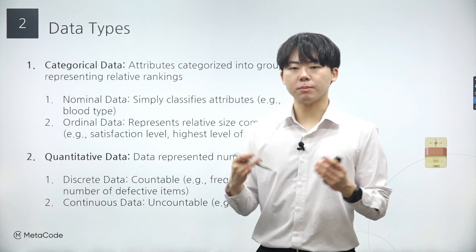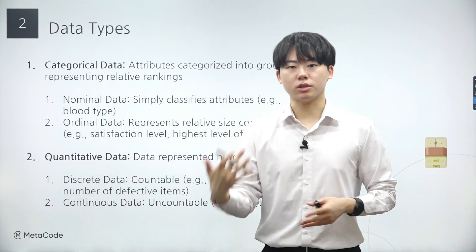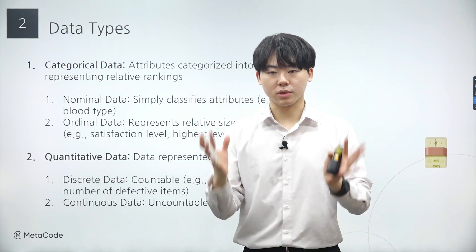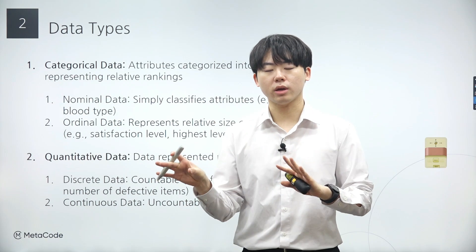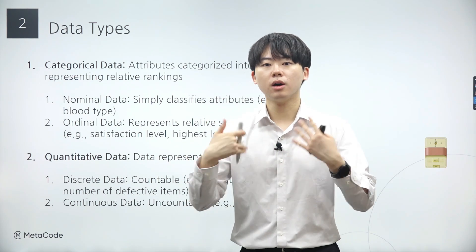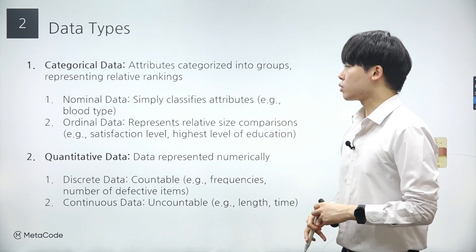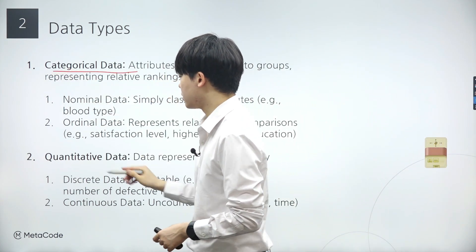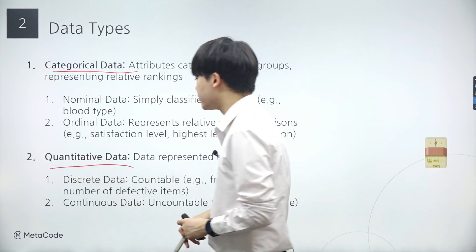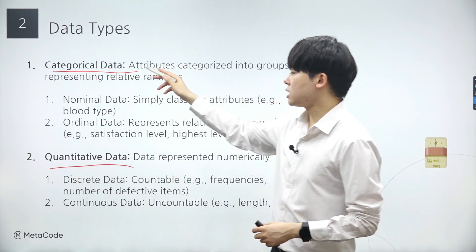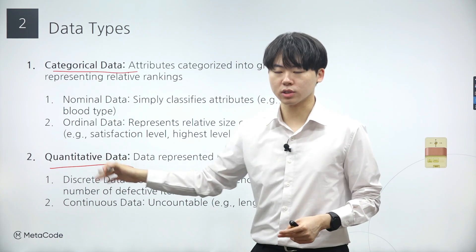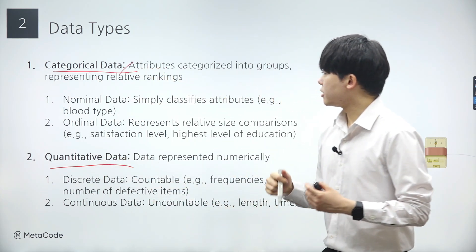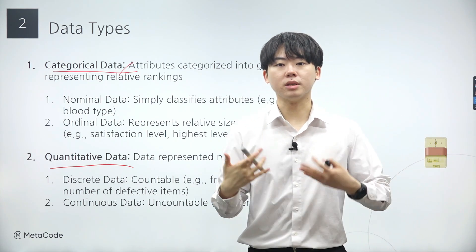As we explore statistics, we'll come across different types of data. These datasets represent our samples, and by employing techniques like visualization and other statistical methods, we'll extract insights about the population. We can categorize data types into two main categories: categorical data and quantitative data. Categorical data are often referred to as qualitative data, while quantitative data are commonly known as numerical data.